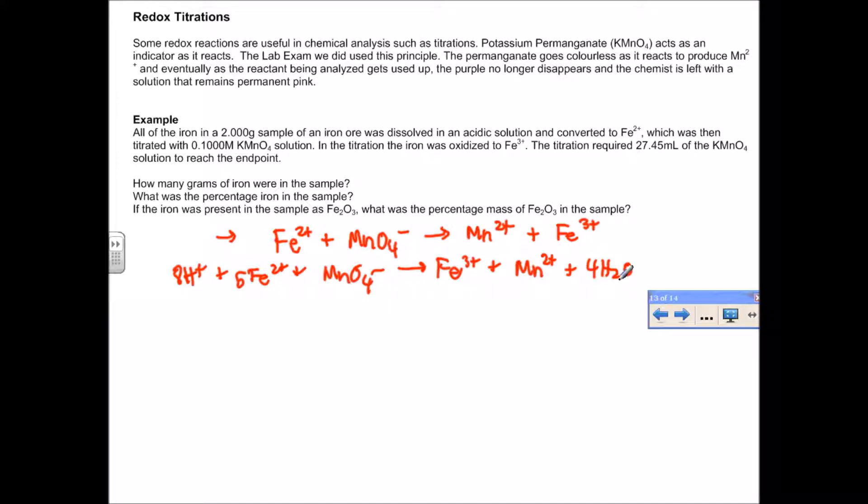This is the balanced equation. We're given that we're starting with a 2-gram sample, and we titrate that sample with 0.1 molar permanganate. The volume of permanganate required is 27.45 milliliters. The moles of permanganate that reacted with the iron is 0.002745. That's step one, finding the moles. Step two, we use the ratio. The moles of Fe²⁺ that we have is actually five times that.